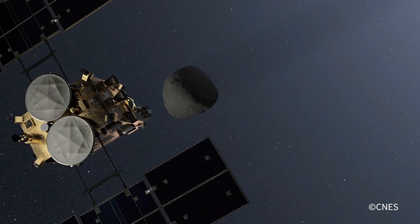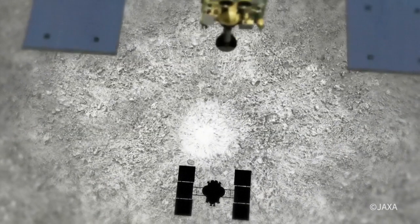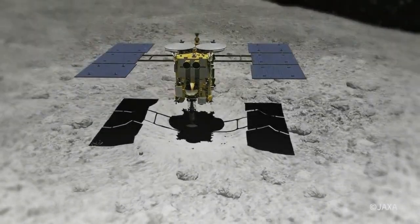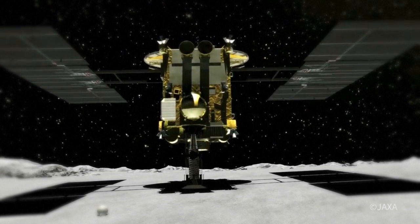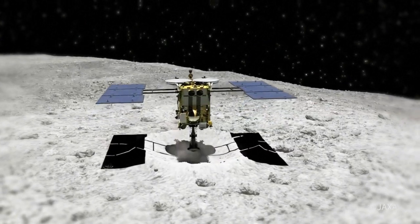The probe, in orbit above the asteroid, must undertake a touch-and-go maneuver. Once it reaches the surface, it deploys a sampling horn to pick up a sample of dust generated by firing a small projectile of Tantalum, a hard, rare-earth metal, into the surface of the asteroid.